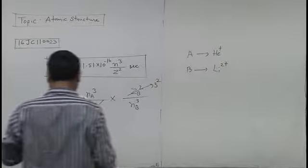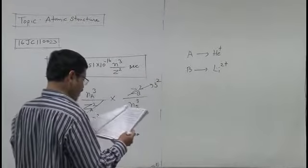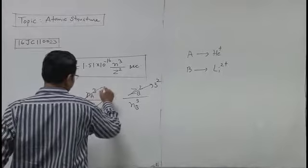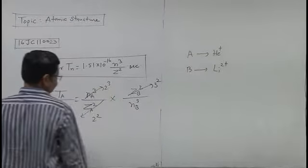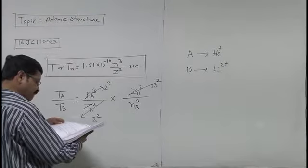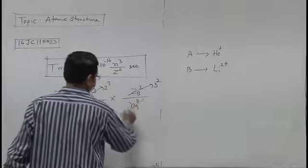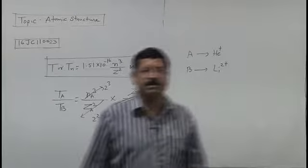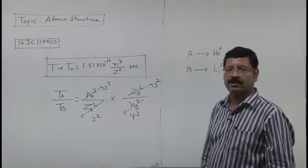iska atomic number 3 ka square. Ab kaha gaya hai second orbit, Bohr's orbit, to yaha 2 ka cube. Solve karne se this will give us the required answer. Thank you.